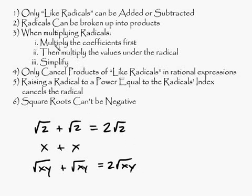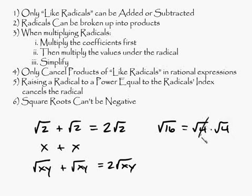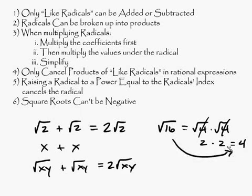And number two is radicals can be broken up into products. So what that means is, let's say you have root 16. Well, that's equal to root 4 times root 4. And this would be equal to 2. This would be equal to 2. 2 times 2 is equal to 4. And 4 is equal to root 16.